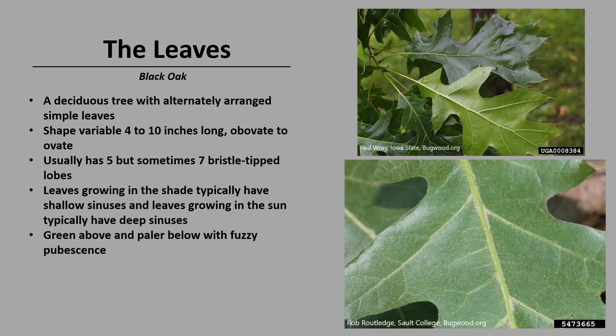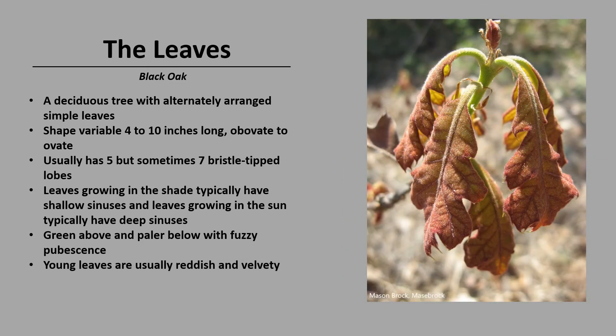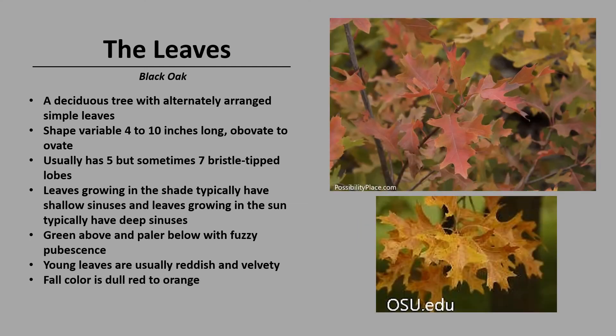The leaves are green above and pale below with fuzzy pubescence. Young leaves are usually reddish and very velvety, and fall color is dull red to orange.